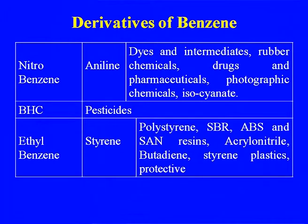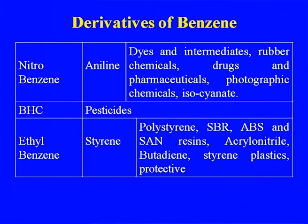Styrene derivatives include polystyrene, SBR (styrene butadiene rubber), ABS (acrylonitrile butadiene styrene), polymer resins, ACN resin, and ABS plastics. Toluene has relatively less use directly, but one major use is the manufacture of benzoic acid. Toluene can also be disproportionated or dealkylated to get the more valued products benzene and xylene.